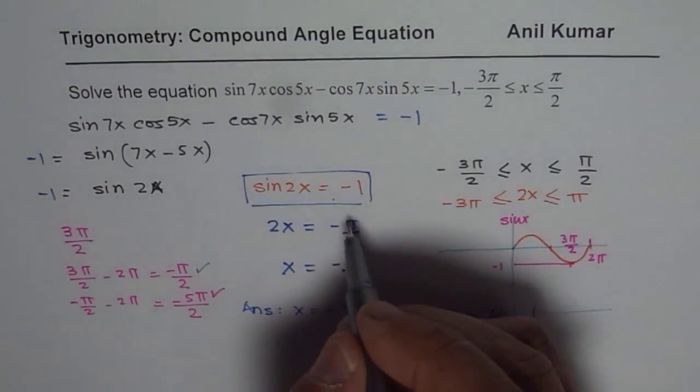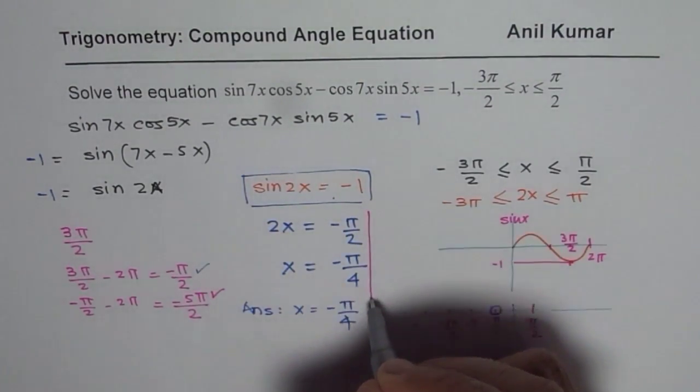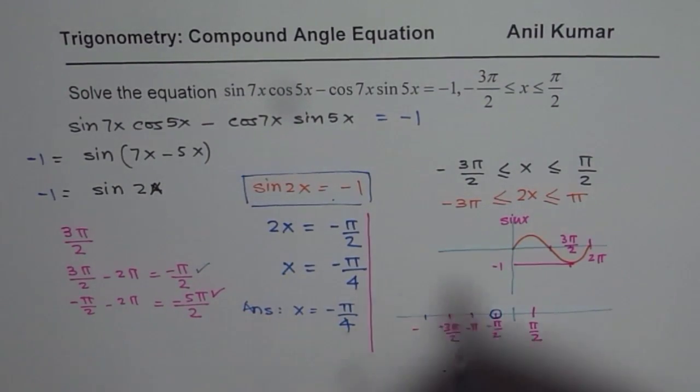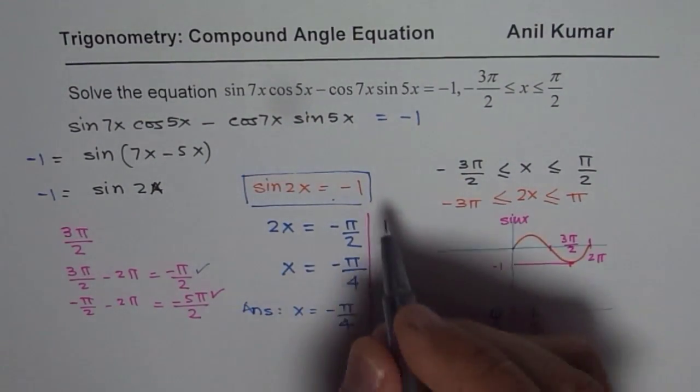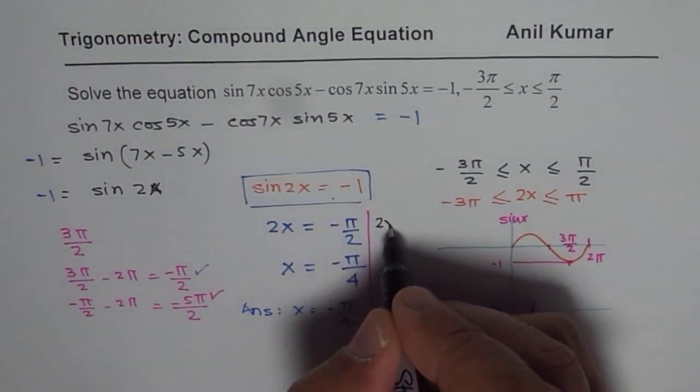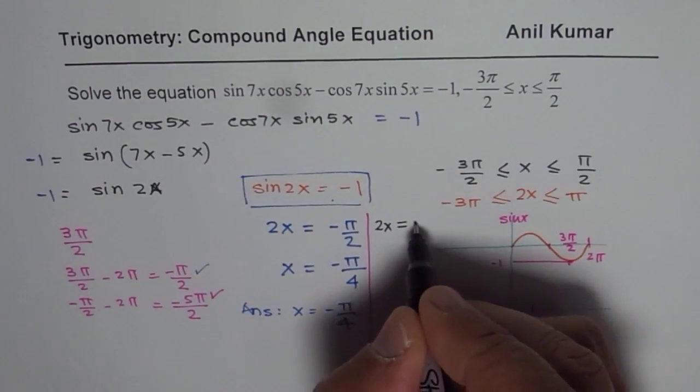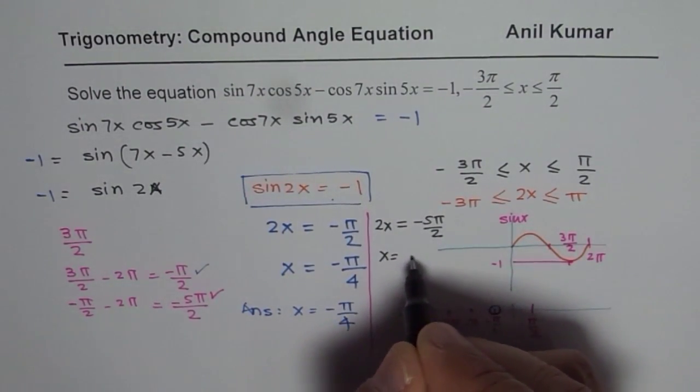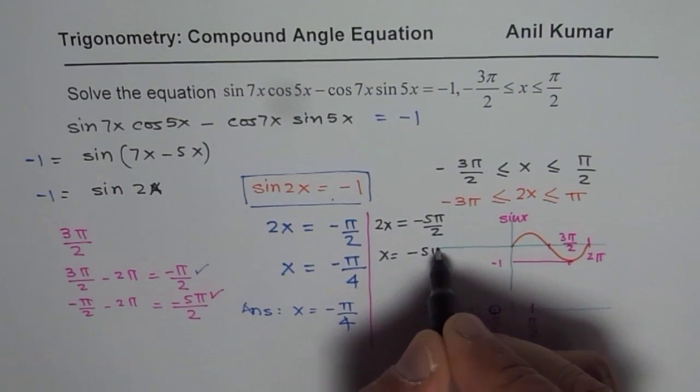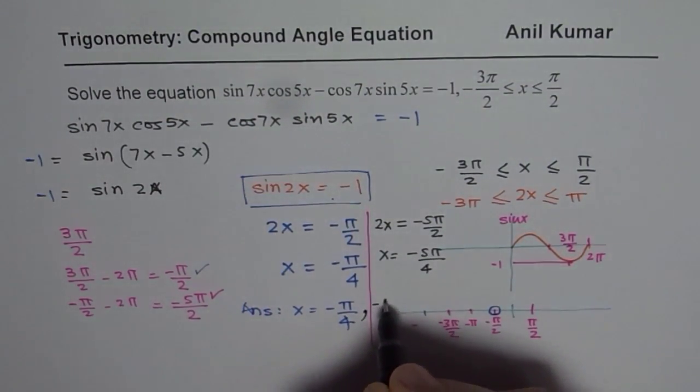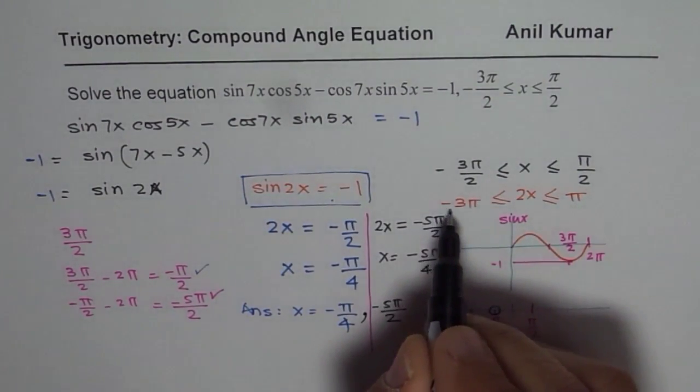This is one solution. The second solution is minus 5 pi by 2. We will write 2x is also equal to minus 5 pi by 2. And so we get x equals to minus 5 pi by 4. We have two solutions. One is this. The other one is minus 5 pi by 4. Minus 3 pi, right? This is within the domain of minus 3 pi.